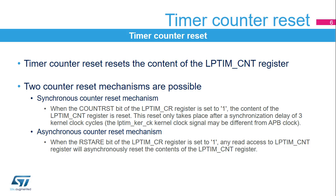The low-power timer features a counter-reset function used to reset to zero the contents of the LP-TIM-CNT register. Two counter-reset mechanisms are possible: the synchronous counter-reset mechanism and the asynchronous counter-reset mechanism. A synchronous counter-reset is performed by setting the COUNT-RST bit; due to the synchronous nature of this reset, it only takes place after a synchronization delay of three LP-TIM kernel clock cycles. When the RST-ARE bit is set, an asynchronous counter-reset is performed on the next APB read access to the LP-TIM-CNT register.